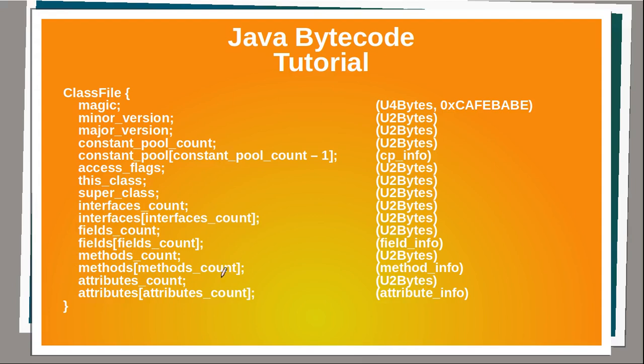Finally, we have a list and description of all methods and additional attributes, like for example whether or not this class or interface has been deprecated.